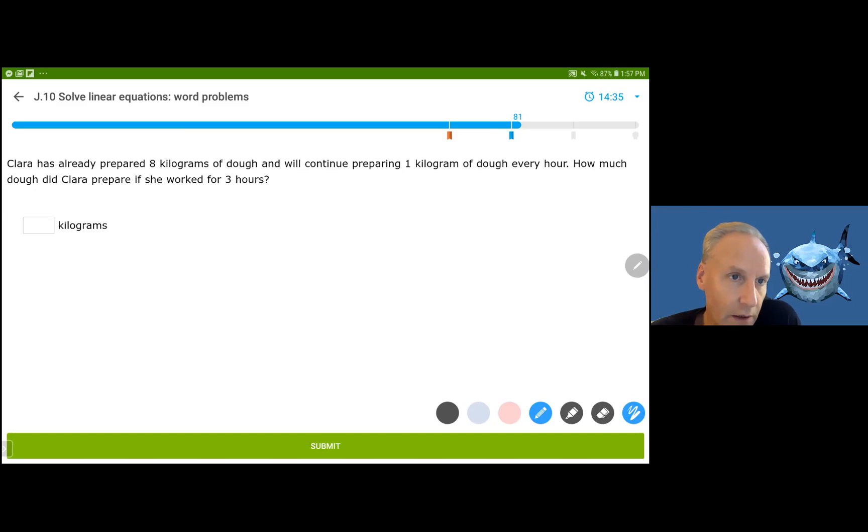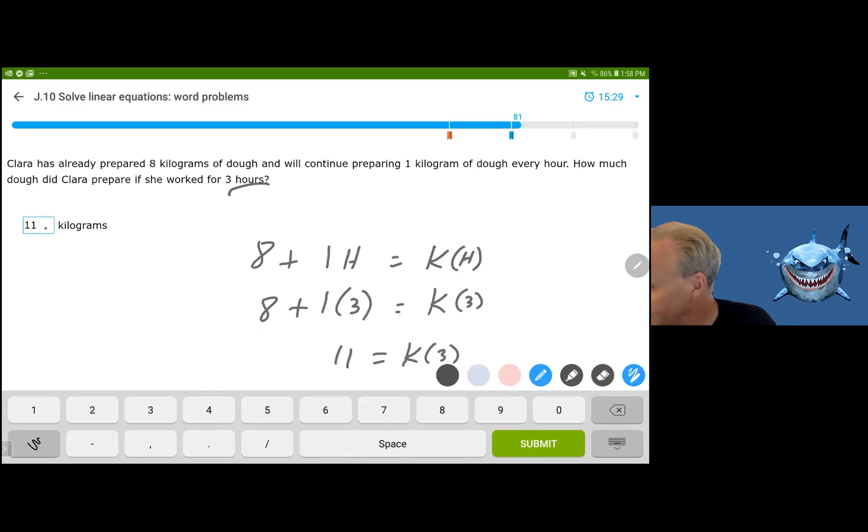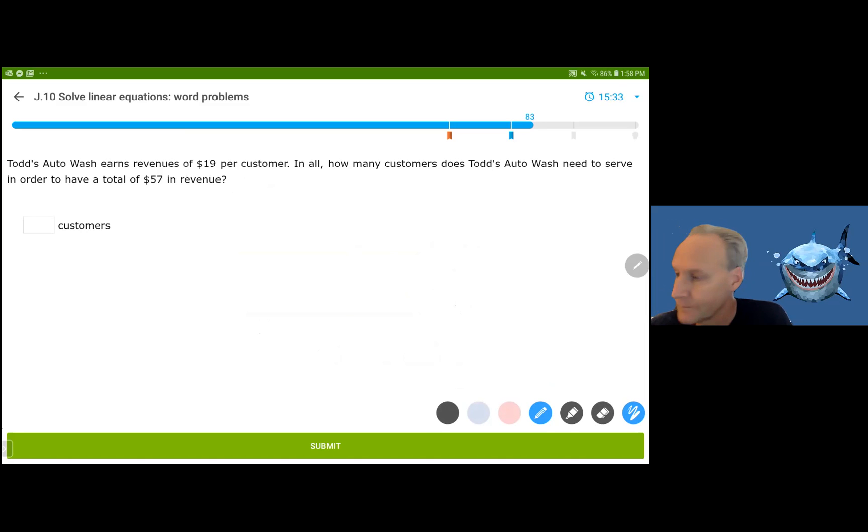Sierra has already prepared eight kilograms of dough and will continue preparing one kilogram of dough per each hour. So this is eight plus one every hour. And we're interested in, I'm going to say K kilograms of dough based on the number of hours that have gone by. And it says if she works for three hours, so the three represents the hours. And this of course is 11, eight plus three is 11 kilograms of dough. If she works three hours, if she had worked 30 hours, then it would be 110. You know, it's you just substitute in the number of hours she worked. It would be 11.